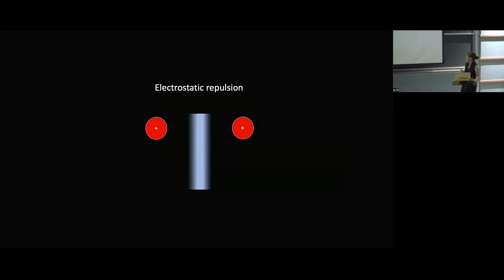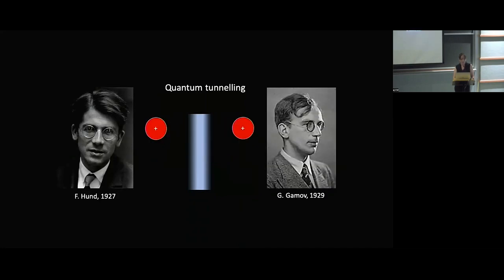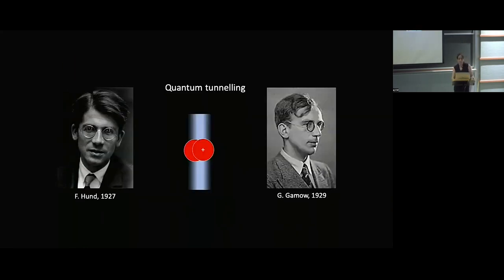The second problem is how to get two protons close enough so they can fuse, as opposed to be repelled by their own electric field. And the solution to that problem is called quantum tunneling. And it was discovered theoretically by Hund in 1927, and then applied to this particular problem of proton fusing by Gamow a few years later. And the idea behind quantum tunneling is that particles in the quantum world have a small, very small, but non-zero probability of not being where you expect them to be.